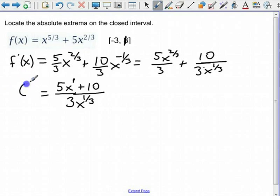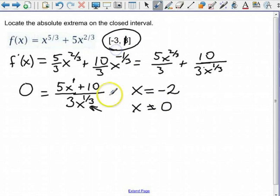So to locate our critical numbers, we're going to set that equal to 0. So what's going to make the derivative equal to 0? Whatever values of x make the numerator equal to 0. That means we have a critical number at negative 2. Are there any places where the derivative is undefined? Yep. We can't let x equal 0. So I have two critical numbers, negative 2 and 0. I also have to check my end points. Those are critical numbers as well.